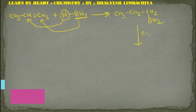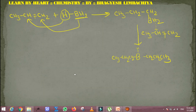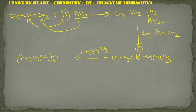Then this intermediate reacts with another molecule of propene. Again the bond breaks: one H goes to the terminal carbon and BH2 attaches. Boron now has one hydrogen and two propyl groups attached. This species then reacts with a third molecule of propene, and finally we get tripropylborane — boron with three propyl groups.